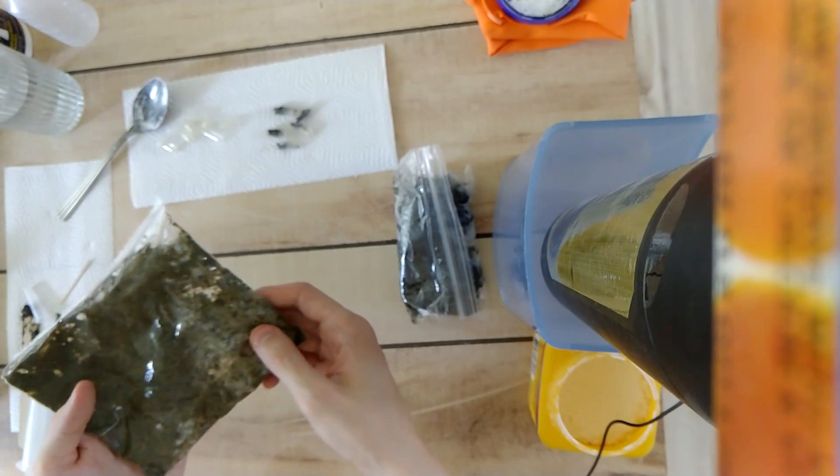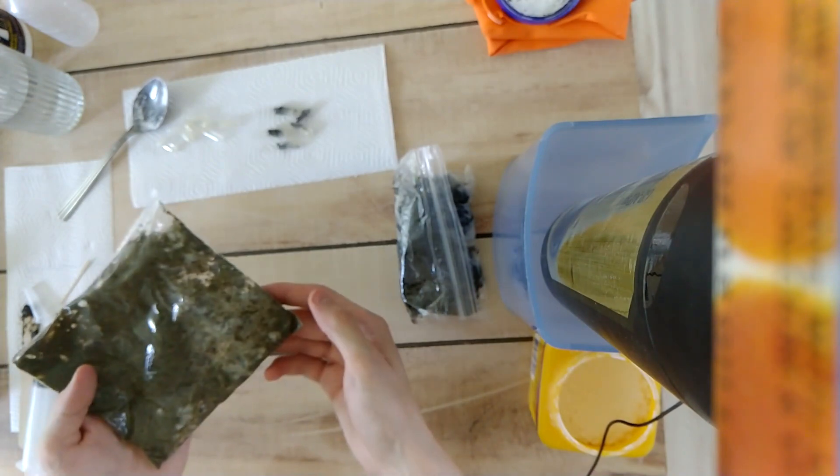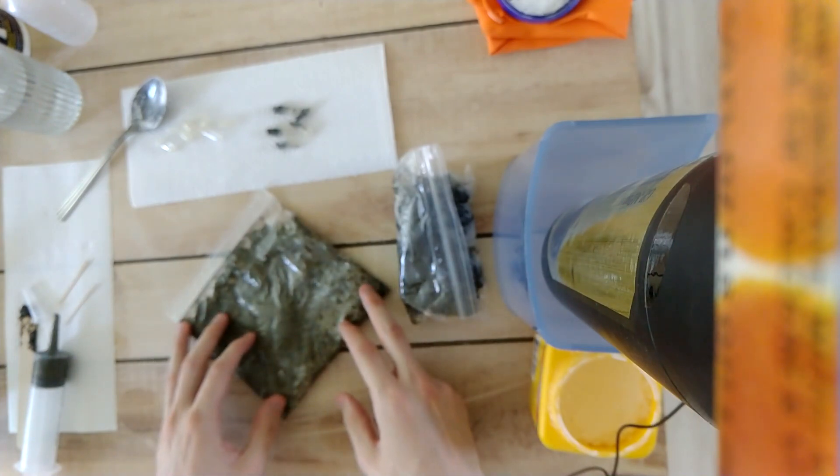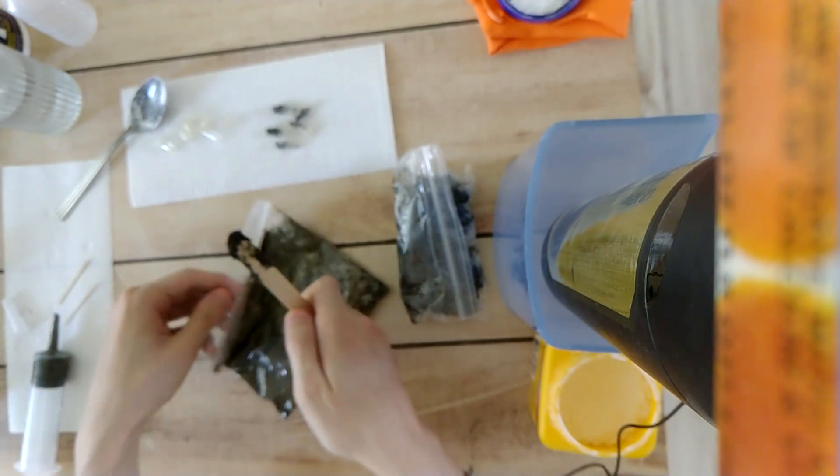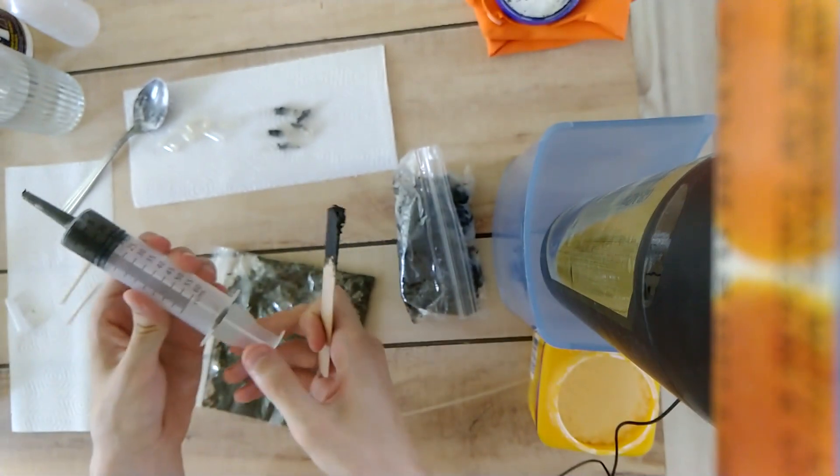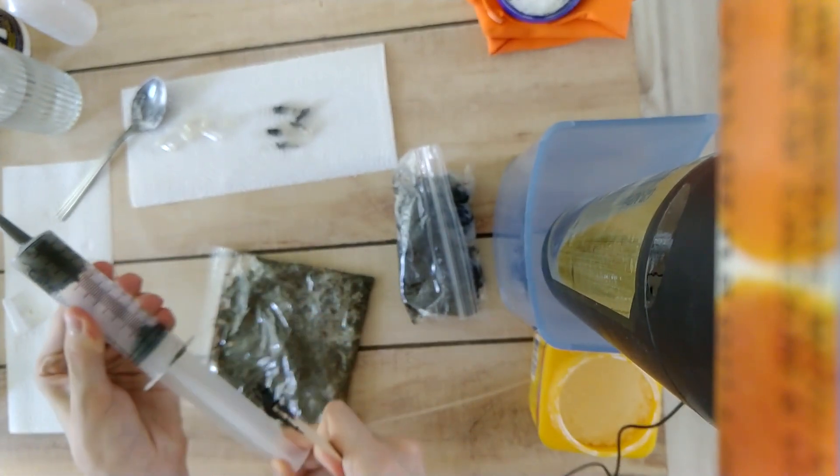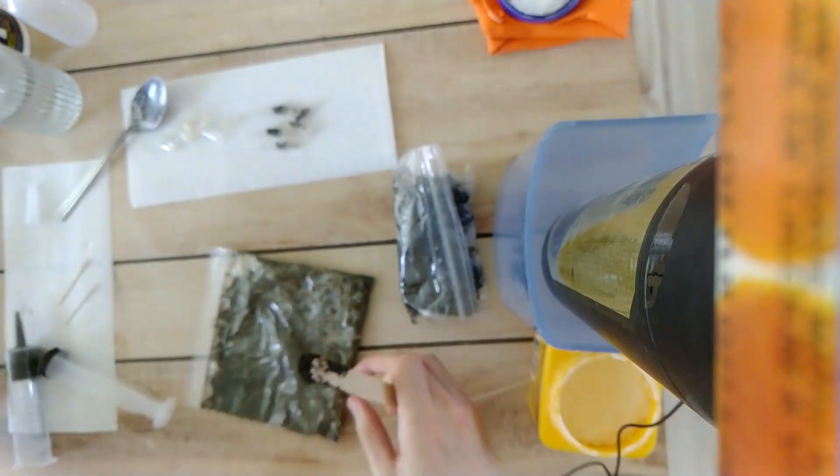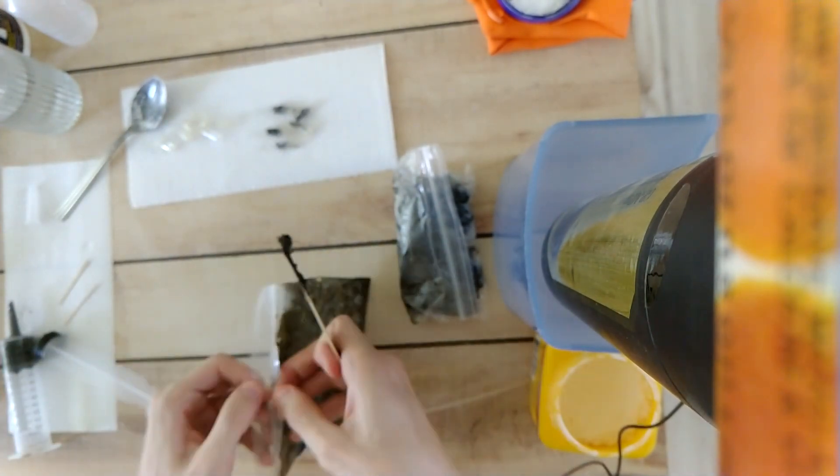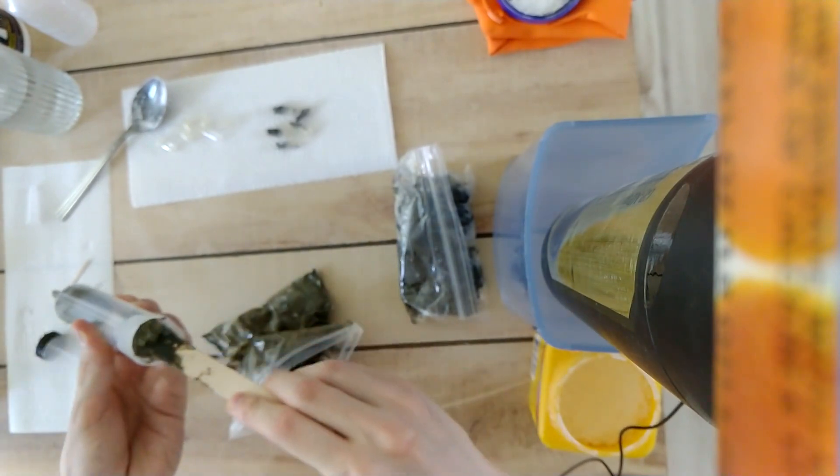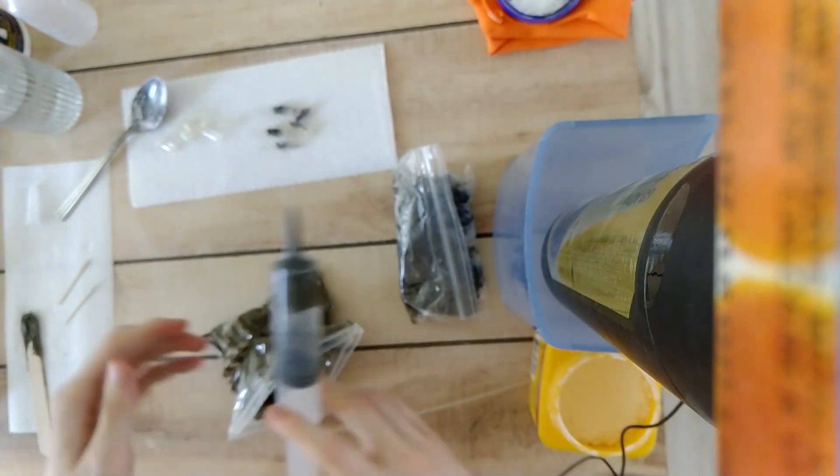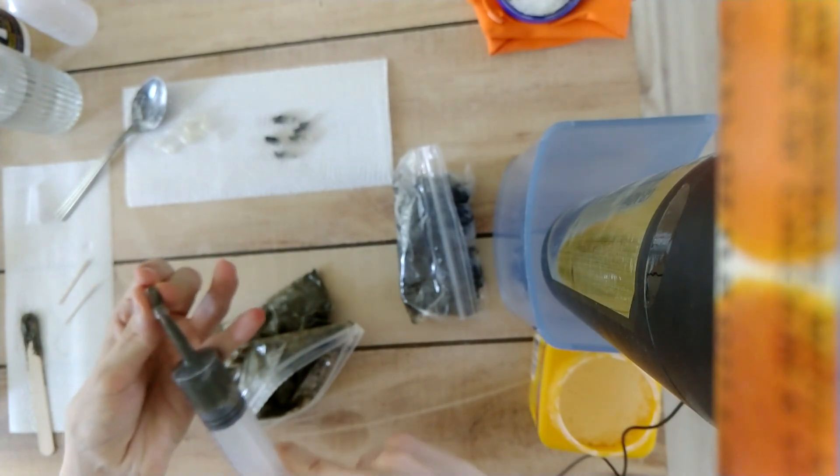So typically we would want to section it off before freezing but the powdery consistency actually makes that hard to do so we would just freeze it like this. And then if we were going to make capsules with the antifreeze version it would just be the same thing. We take our spatula, open the bag, pull off the end, and there we go that's how we make stool capsules and process stool for FMT.